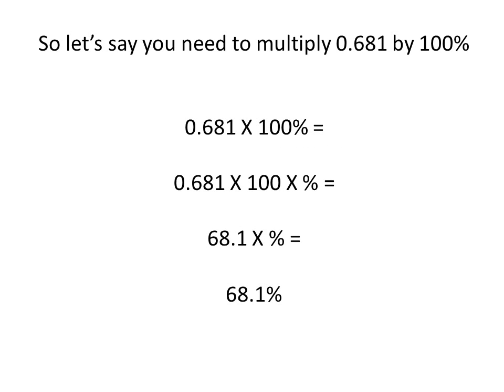Let's say you need to multiply 0.681 by 100 percent. Essentially, you're converting 0.681 to its equivalent number as a percentage. We're going to show you how to do that here.